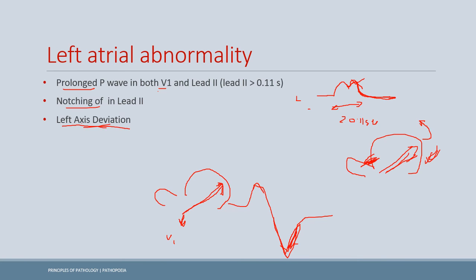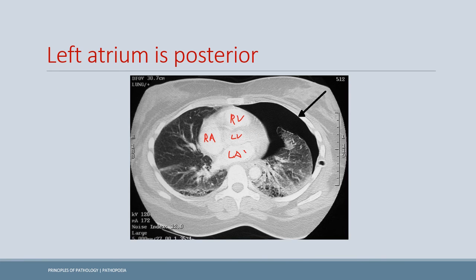Left axis deviation is also seen in left atrial abnormality, because dilation of the left atria shifts the mean axis of the heart towards the left. An important anatomical point: the left atrium is posterior and the right atrium is slightly anterior. V1 therefore measures the positive reflection of right atrial depolarization and the negative reflection of left atrial depolarization, producing a biphasic P wave tracing.